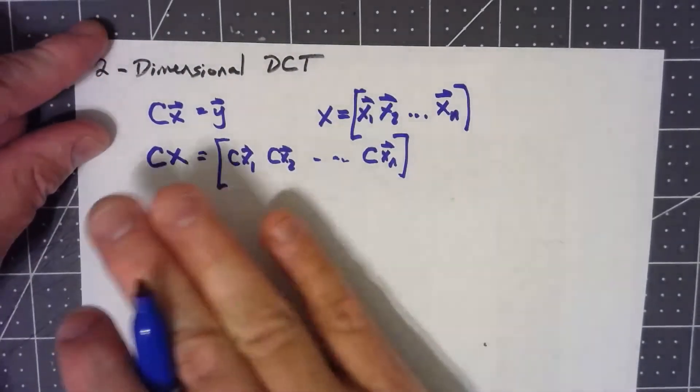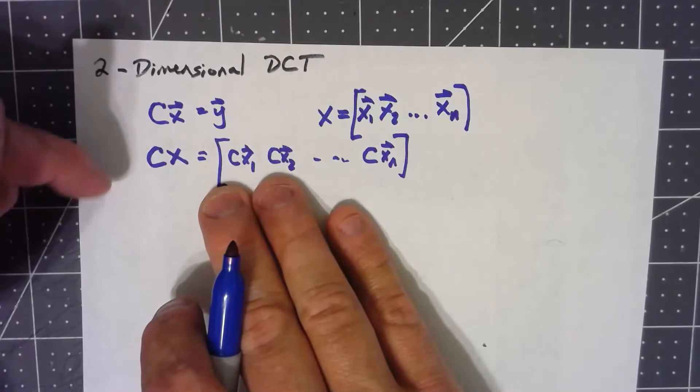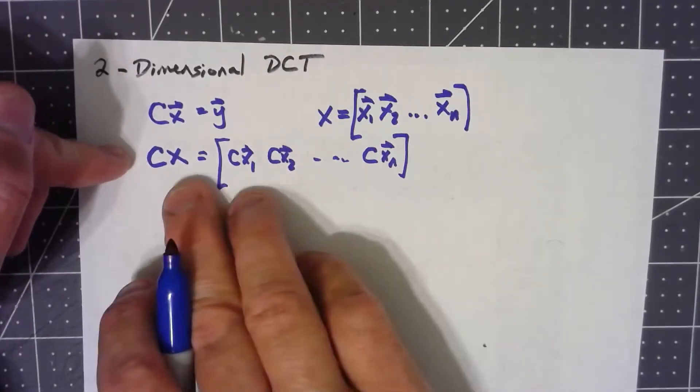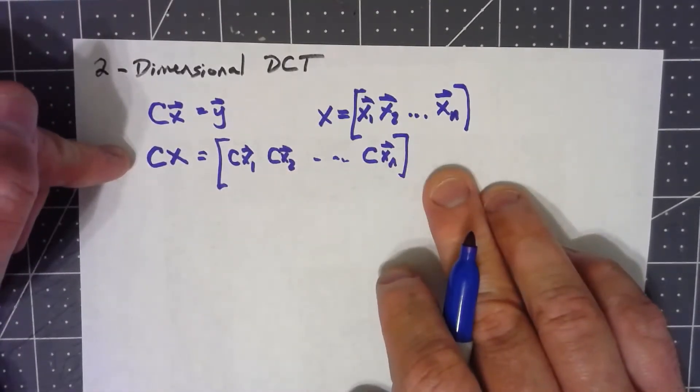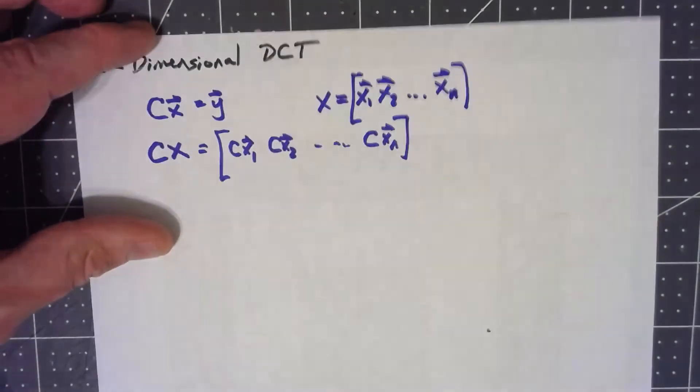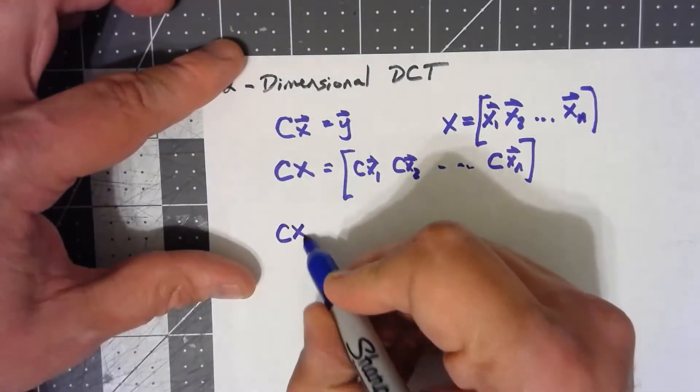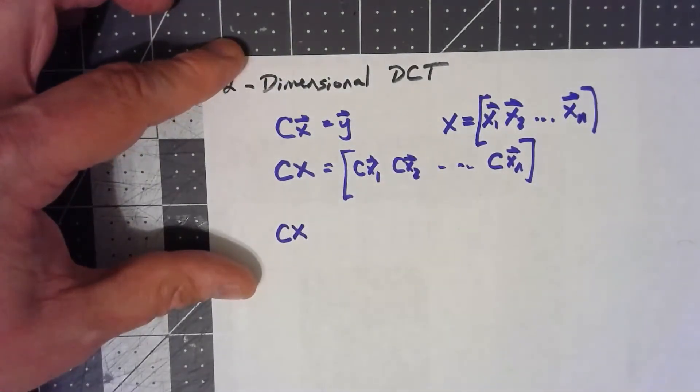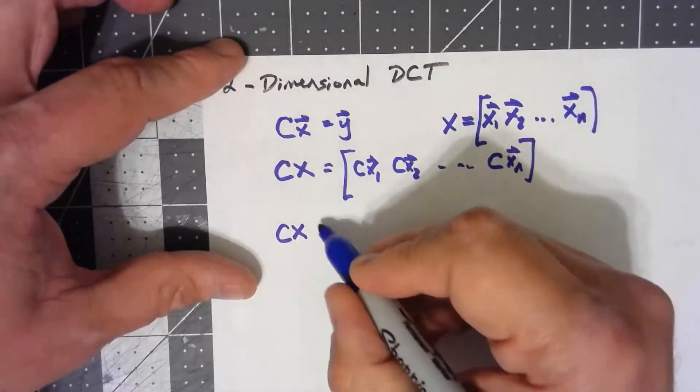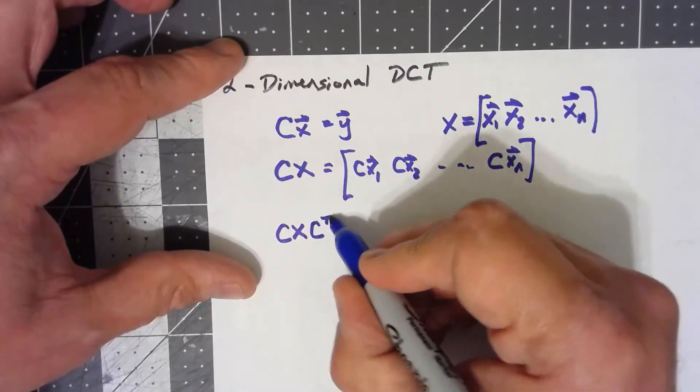Well, it turns out that same matrix can be used to do it. I just need to use it so that the matrix applies to the rows instead of the columns. The way we can get it to do that is I still want to do the DCT to the columns like I did before, but then I can do the DCT to the rows by multiplying on the right by C transpose.